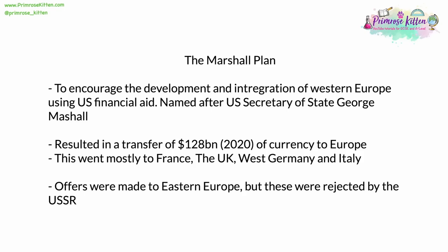The Marshall Plan was named after the senior US diplomat George Marshall. The idea was to encourage the development and integration of Europe, especially Western Europe, using US financial aid. Over a period of years, this resulted in a transfer of $128 billion at 2020 currencies to Europe. Mostly this went to France, the UK, and Italy, with a great deal going to the fast-developing West Germany. Offers were made to Eastern European countries, but at the behest of Stalin and senior communist officials in Moscow, Eastern European countries were forced to reject this offer, and a pale Soviet substitute was set up instead.